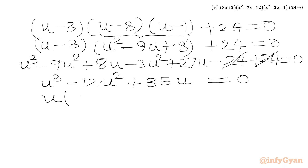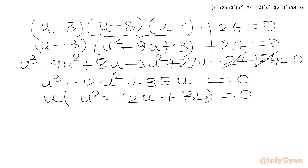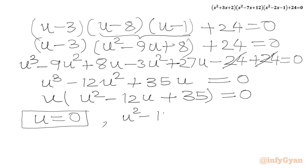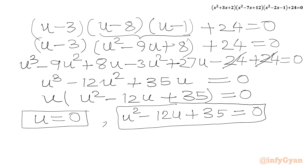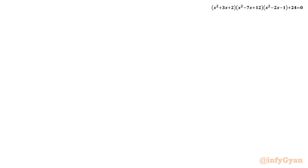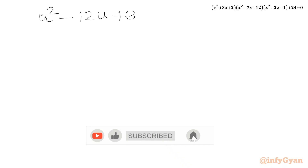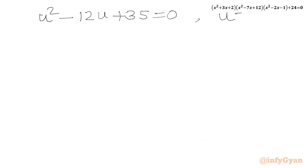We take u common: u(u²-12u+35) = 0. Applying the product-zero rule, we get either u = 0 or u²-12u+35 = 0.